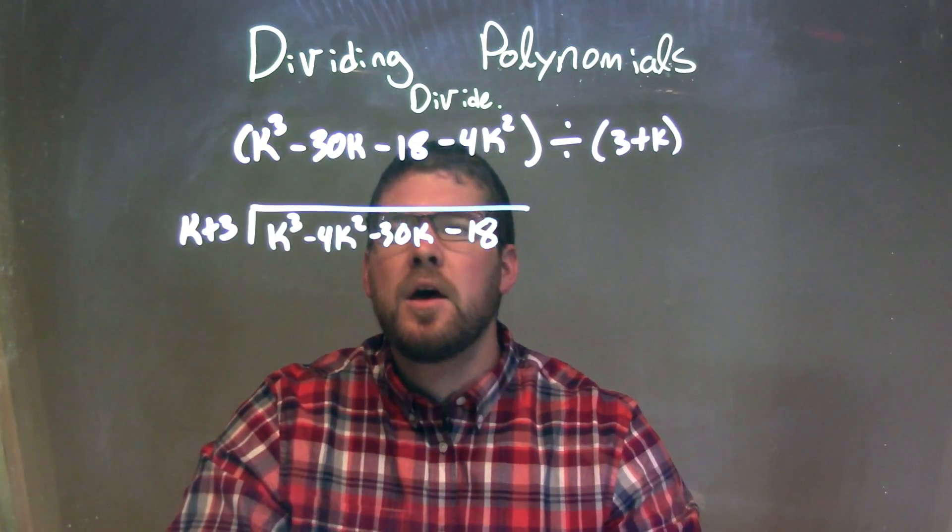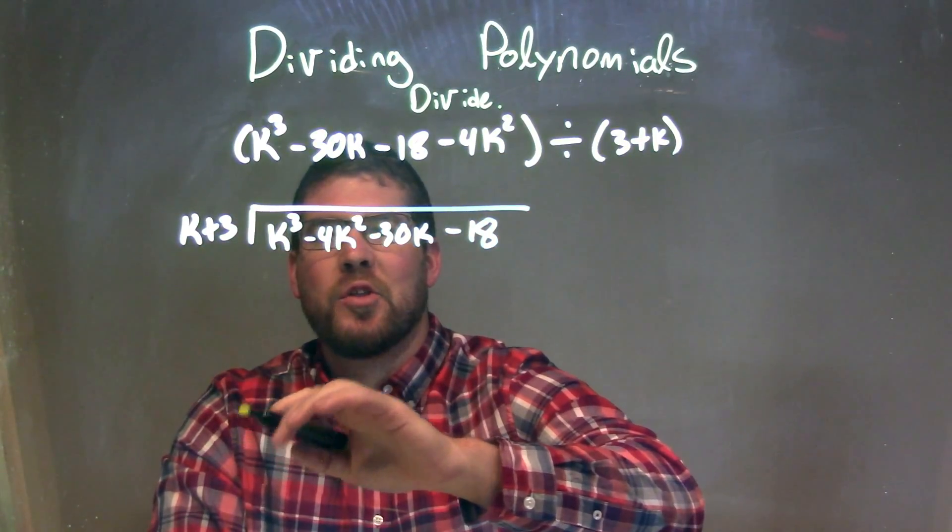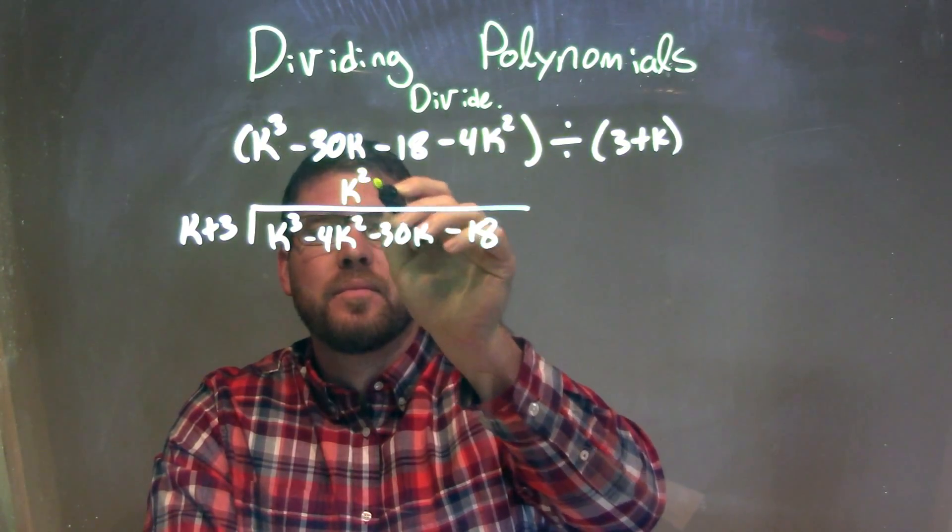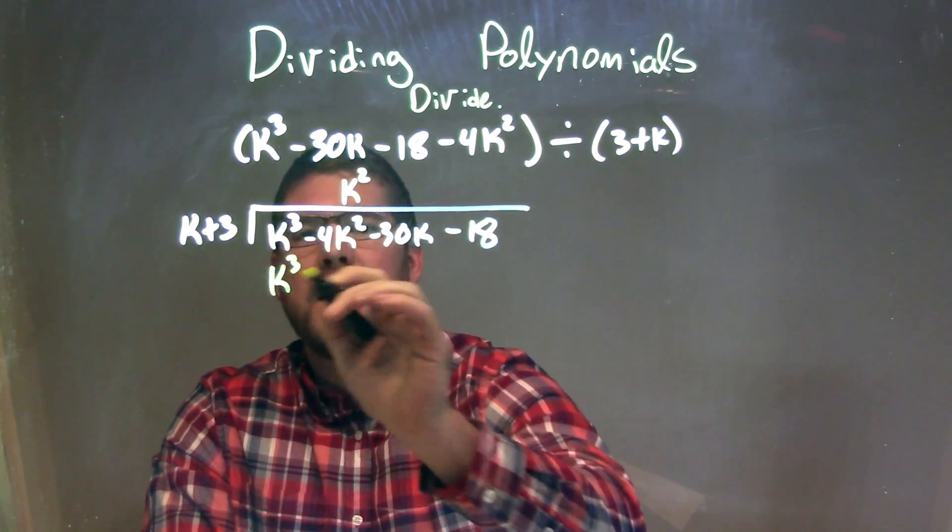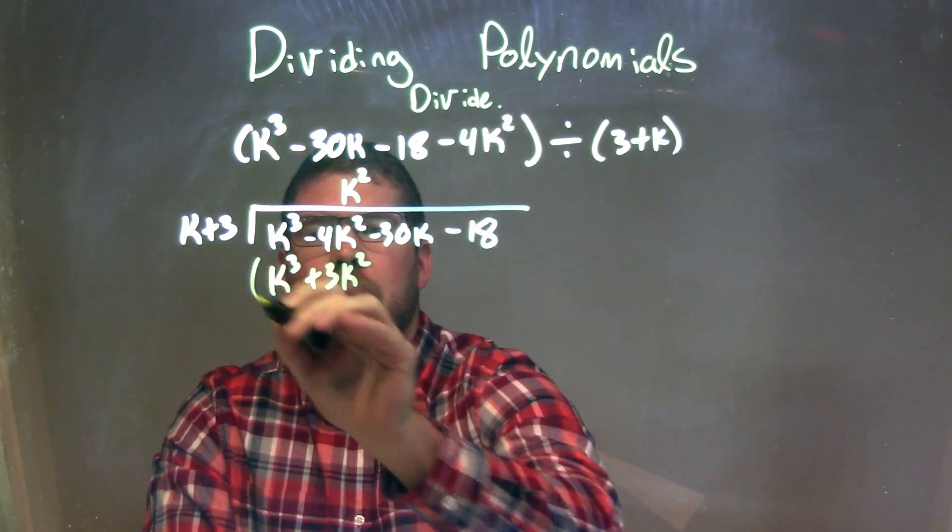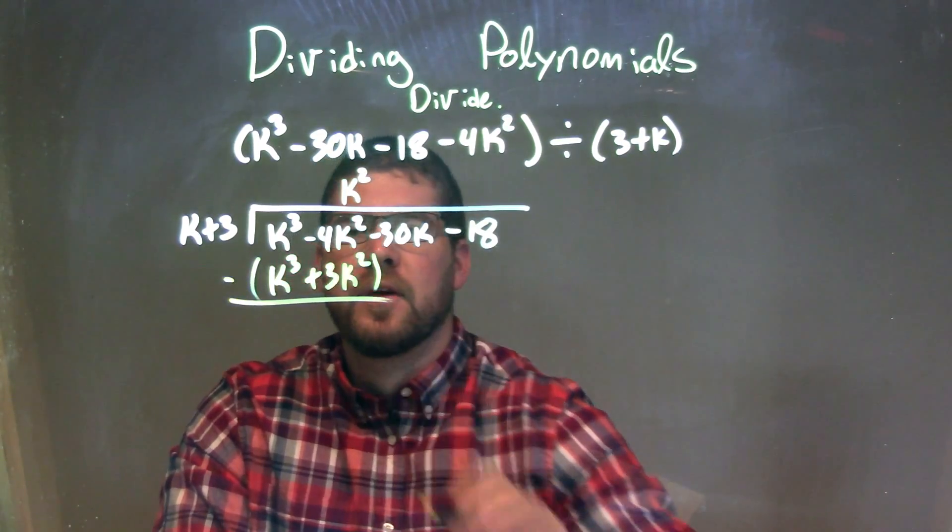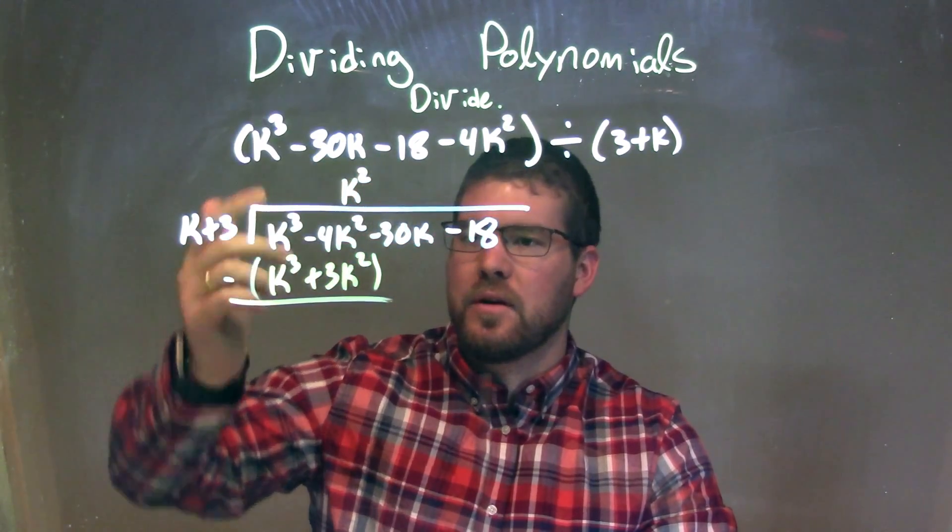Now I can solve that. I ask the question, what times k gives me k to the third, and that's just k squared. Pretty simple. k squared times k is k to the third, and k squared times 3 is a plus 3k squared. I'm going to subtract the two right there. k to the third minus k to the third is just 0.